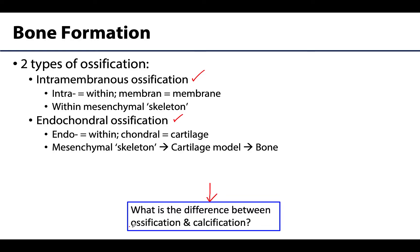Ossification is the process by which bone forms, and this can happen in four specific situations. It can happen with initial formation of bone, which is what we're going to discuss in detail here. Ossification also occurs with growth of bone during the juvenile period. And then there will be adult bone remodeling of bone, and lastly repair of bone. So those are going to be the four specific situations that ossification can occur.